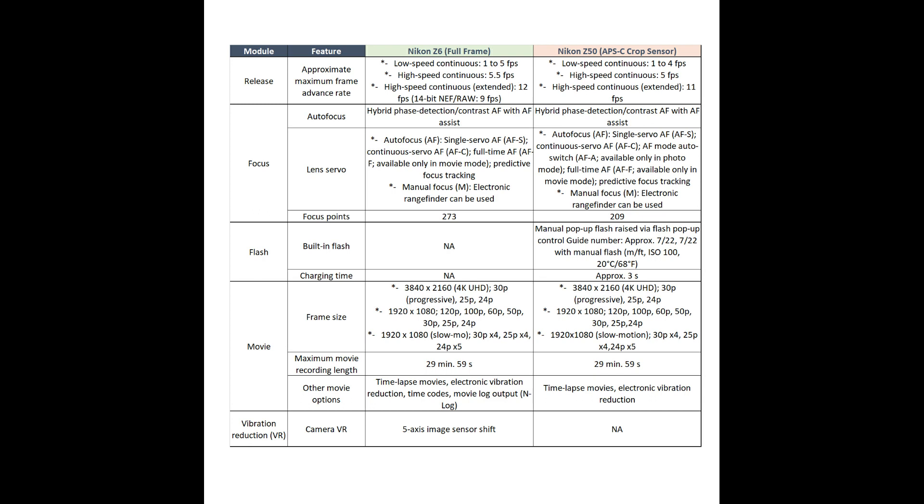Both cameras use the same autofocus technique. Compared to Sony, some photographers complain that Nikon's autofocus isn't as quick, but as far as my Nikon Z6 is concerned, I'm happy with its autofocus — it serves my needs. As for focus points, the Z50 has 209 while the Z6 has 273, a notable difference, though not necessarily a practical issue.